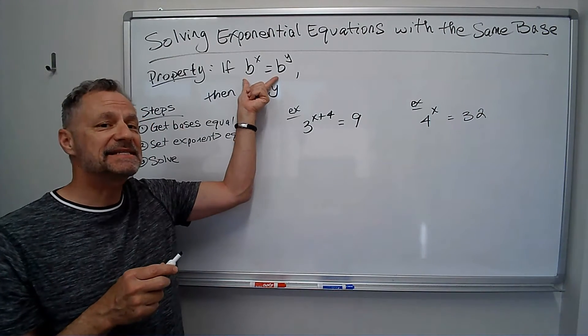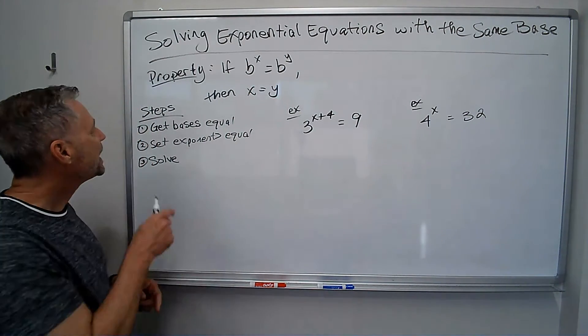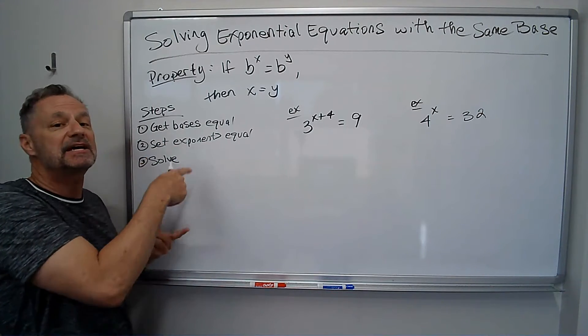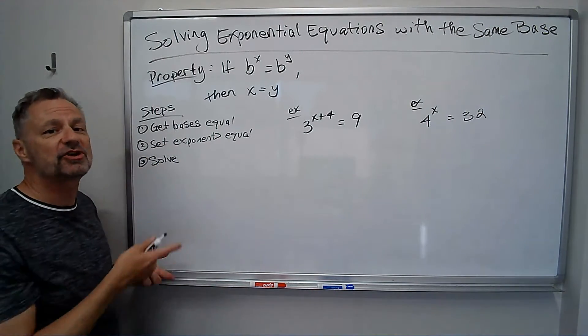If I can get the bases equal, we know the exponents must be equal. And so here's the steps: get the bases equal, set the exponents equal to each other, and then just solve what we have left.